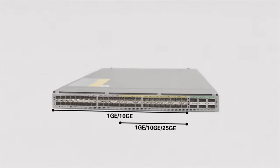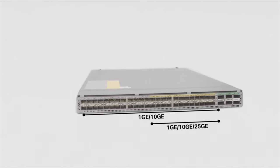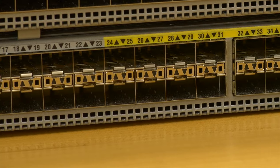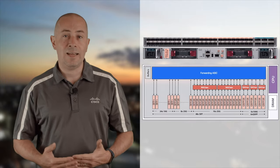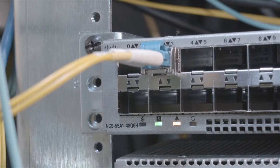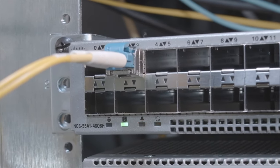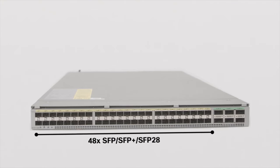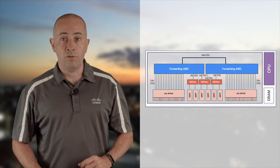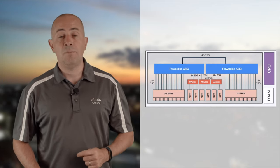The NCS55A2-24Q-6H-S: 1RU, 48 SFP ports, half capable of 25G, all supporting 1G and 10G, plus 6 QSFP ports. Slightly oversubscribed, powered by a single Jericho Plus. The NCS55A1-48Q-6H looks very similar, but all ports are 25G capable and the NPUs are not oversubscribed. Powered by a pair of Jericho Plus with large LPM, connected back to back.